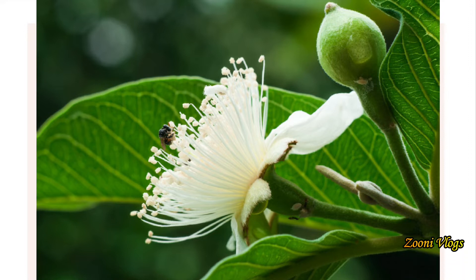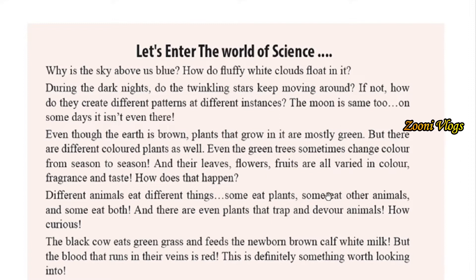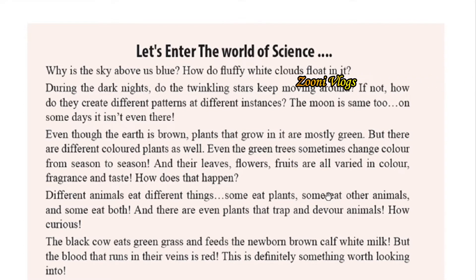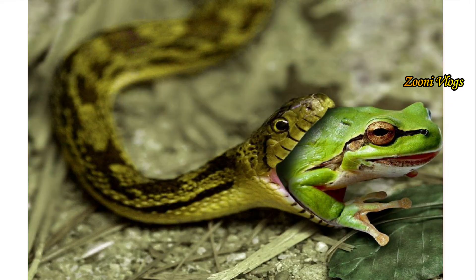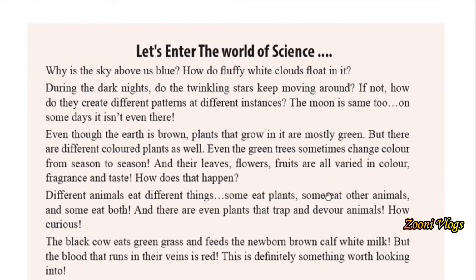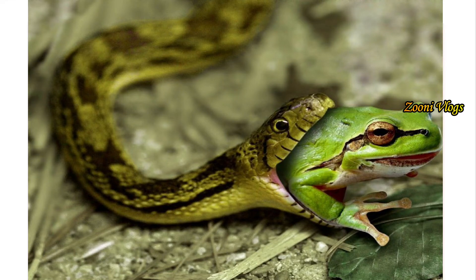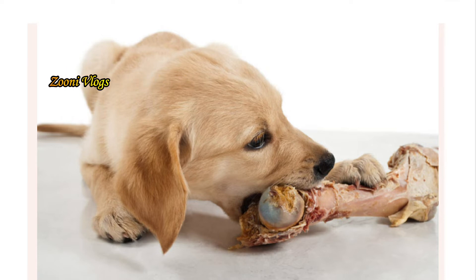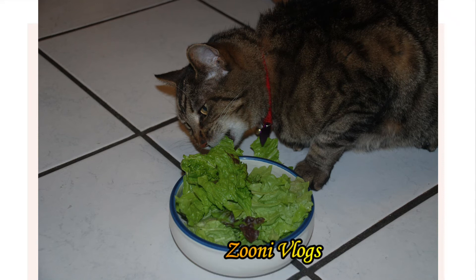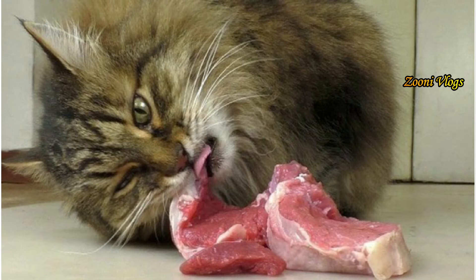Different animals eat different things — some eat plants, some eat other animals, and some eat both. Their food patterns also differ from each other. Some animals eat plants, some like snakes eat other animals, and some like your pet cat and dog eat both vegetables and flesh. There are different kinds of animals in the world.